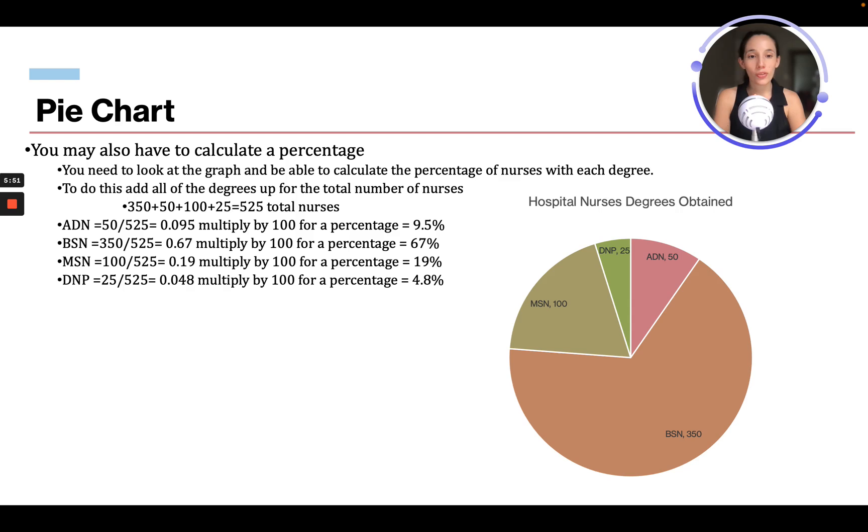And we do the exact same thing. BSN is 350 out of 525, which gives us 0.67. Multiply it by 100, so 67% of the nurses at this hospital have a BSN. MSN are 100 out of 525, which gives us 0.19. Multiply it by 100, that's 19%. DNP is 25 out of 525, which is 0.048. Multiply it by 100, which is 4.8% of nurses at this hospital have a DNP.